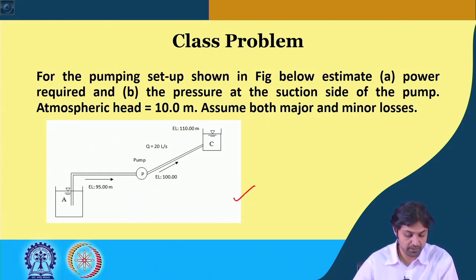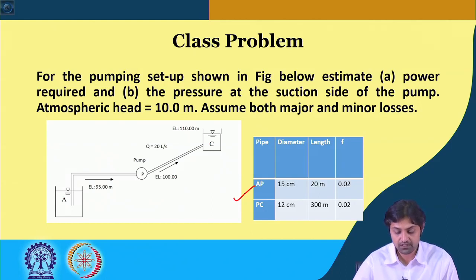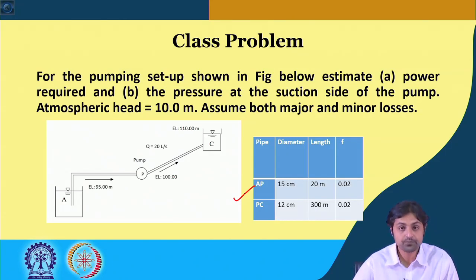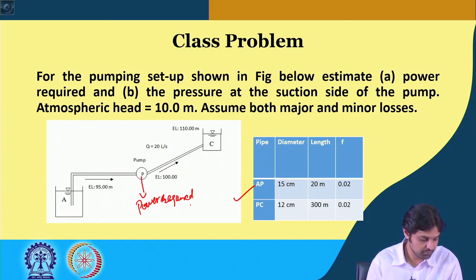There are 2 pipes and the diameter, length, and friction factor for each pipe are given. We have to estimate the power required by this pump and the pressure at the suction side of the pump.